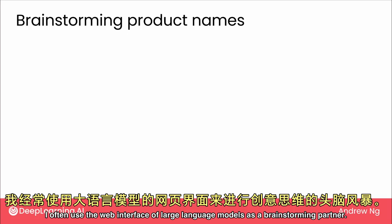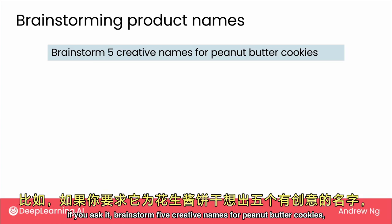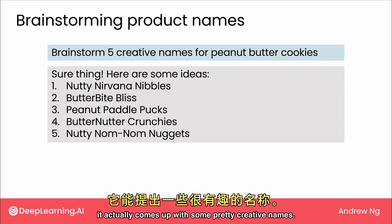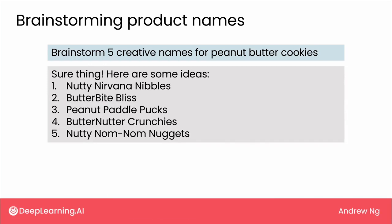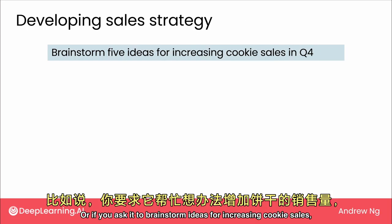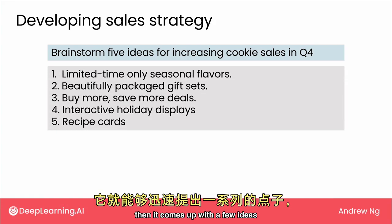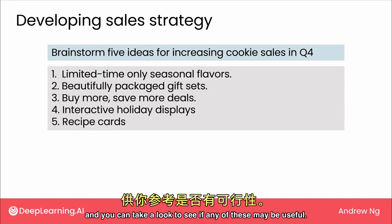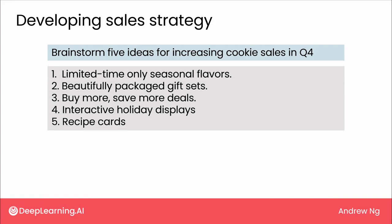I often use the web interface of large language models as a brainstorming partner. If you ask it to brainstorm five creative names for peanut butter cookies, it actually comes up with some pretty creative names — Nutty Nirvana levels. I would eat that. Or if you ask it to brainstorm ideas for increasing cookie sales, then it comes up with a few ideas and you can take a look to see if any of these may be useful.